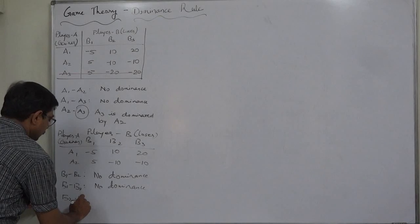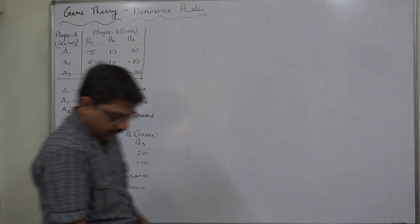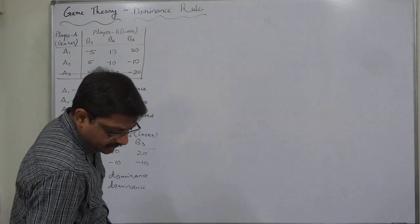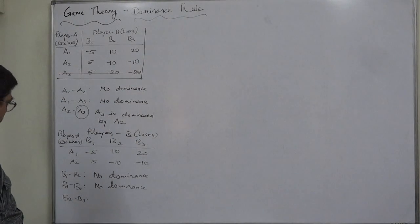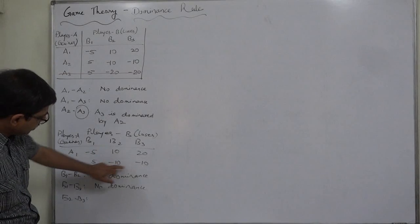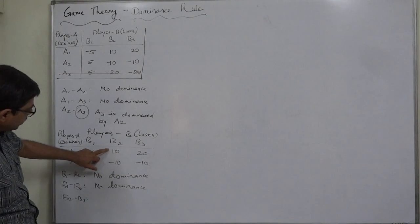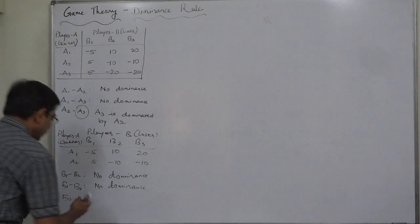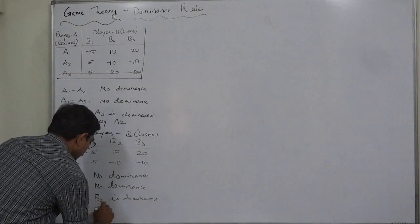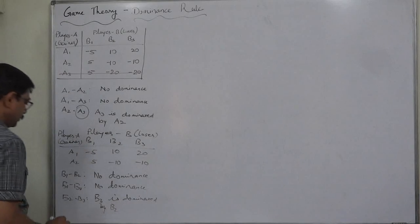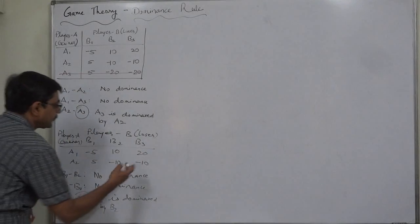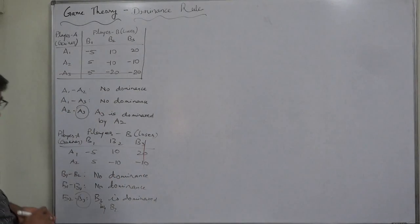Now comparing B2 and B3: B2 dominates in all cases. So B3 is dominated by B2. We can delete B3. The game is now reduced.